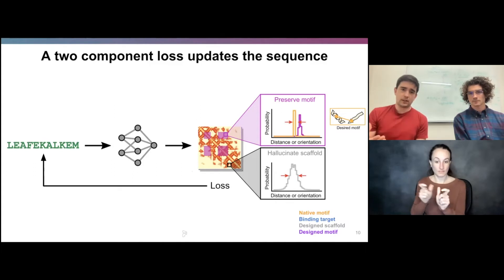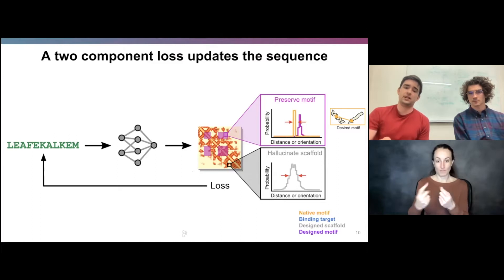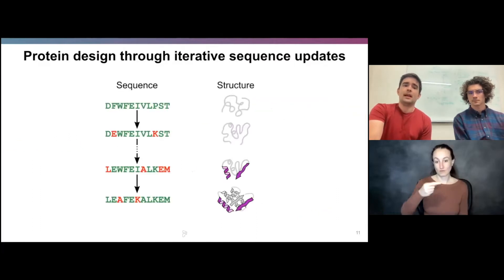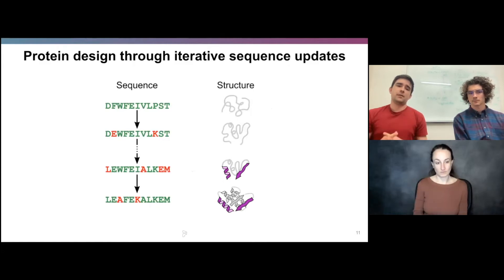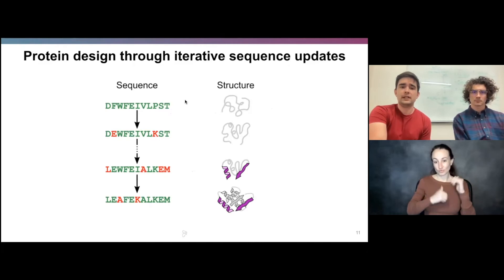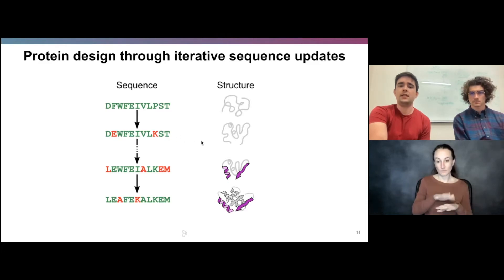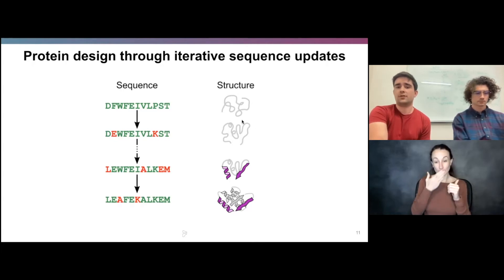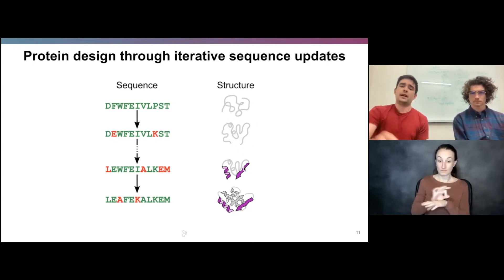Originally we did this using a Monte Carlo method and then transitioned to backpropagating gradients to update the sequence. The design pipeline looks something like this: we start with a random sequence and a corresponding relatively unstructured prediction. Then gradually the sequence is slowly updated, the structure begins to better meet the loss function, gets more structured, and eventually has the structural motif we're interested in.